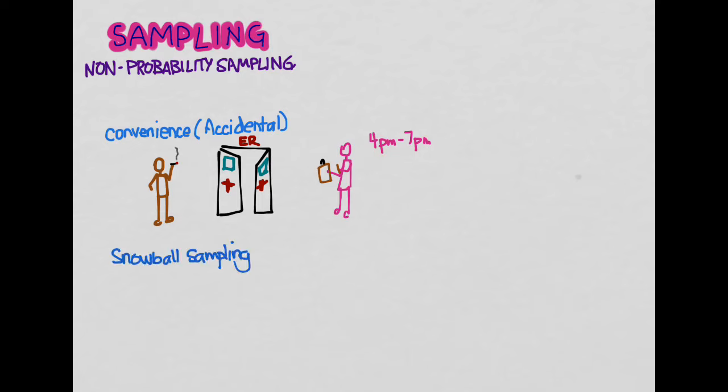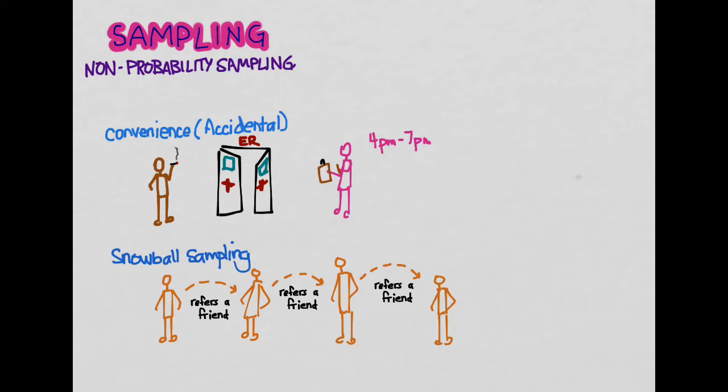Snowball sampling is another kind of non-probability sampling in which one study participant refers their friend to participate in the study, and then this study participant refers another friend, and so on. The problem here is that these people are all socially connected, so they may share some underlying factor among all of them that would be a confounding variable as well. So this is not a good sample either.